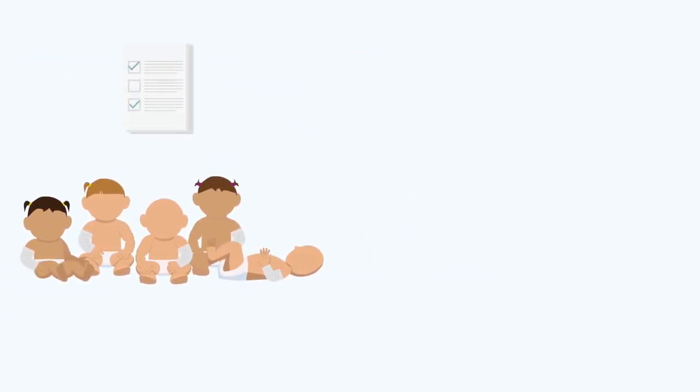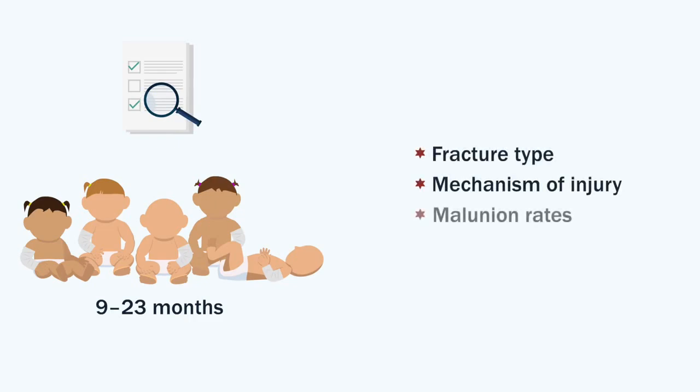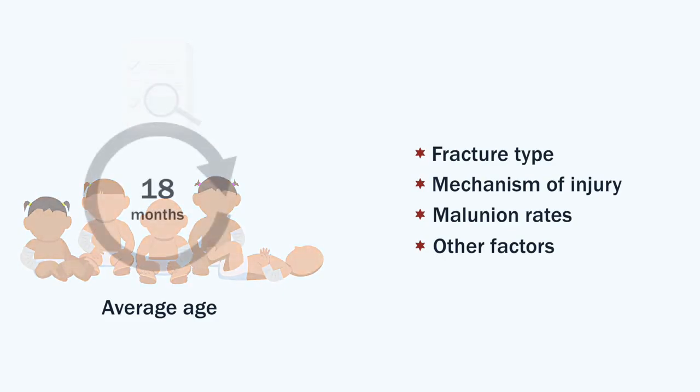They retrospectively reviewed the records of 103 children between the ages of 9 and 23 months and reviewed the type of fracture, mechanism of injury, rate of malunion, and other factors. They found that the average age at the time of fracture was 18 months.